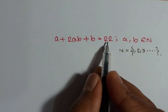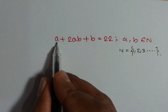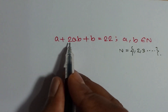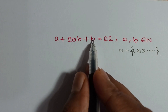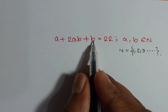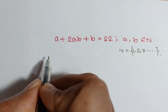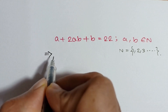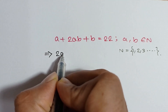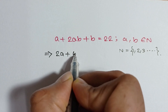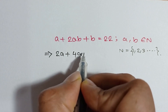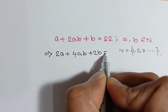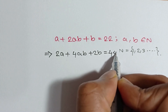So here is our equation. If we take common a from the first two terms, we get a times (1 + 2b), but there is only b. So if we multiply both sides by 2, we get 2a + 4ab + 2b is equal to 44.